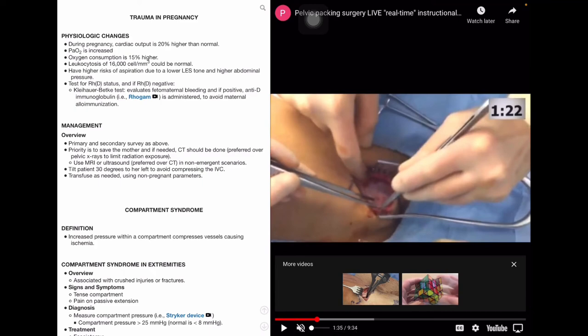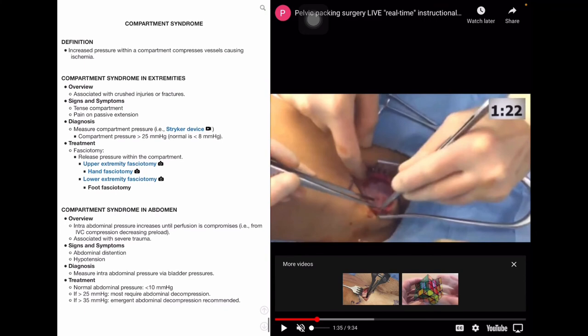Our last section is about compartment syndrome, and this is important because we need to monitor the increased pressure within a compartment because of the high risk that it can compress vessels and lead to ischemia and tissue necrosis. We can have compartment syndrome in the extremities, which is associated with crushed injuries or fractures. Tense compartments or pain on passive extension can be presenting signs and symptoms. A Stryker device is used to measure the compartment pressure with the normal limit being less than 8 millimeters of mercury. If the measurement exceeds 25 millimeters of mercury, then a compartment syndrome is very likely and a fasciotomy should be performed to relieve the swelling and pressure.